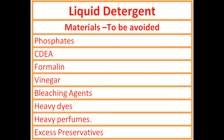If we are formulating premium quality liquid detergent, then we should avoid some materials. Phosphates are not good for our environment, even though they are cheap and effective. CDEA (Cocamide Diethanol Amide) — some reports suggest it is a possible carcinogen. Formalin is also a carcinogen. Vinegar — we can use vinegar in the laundry process but not in liquid detergent. Also avoid bleaching agents, heavy dyes for color, heavy perfumes, and excessive preservatives. We can use preservatives but only the prescribed ones within the prescribed quantity.